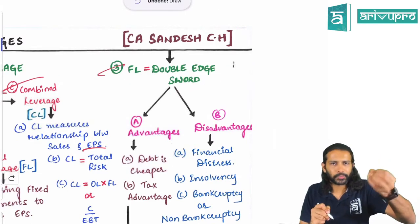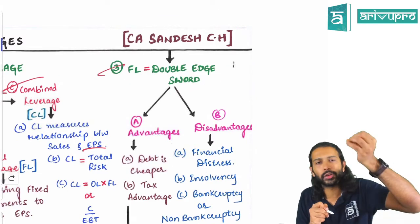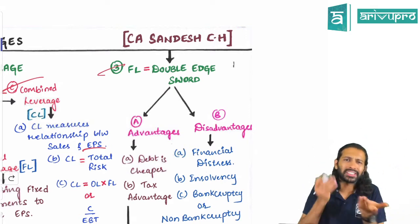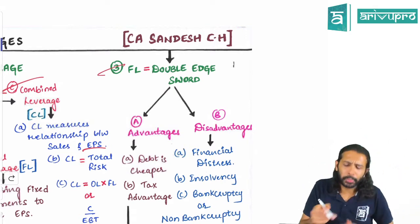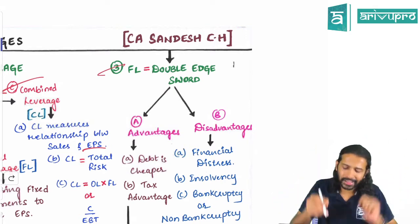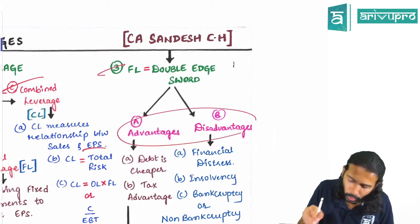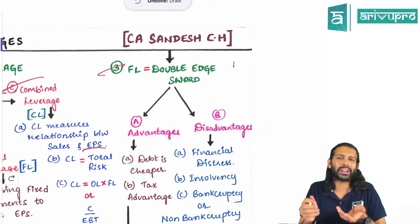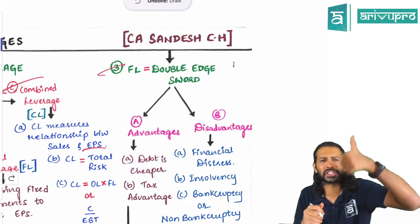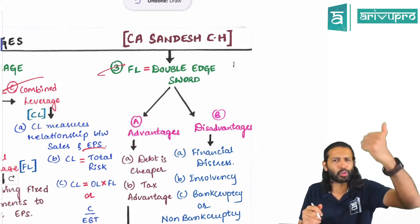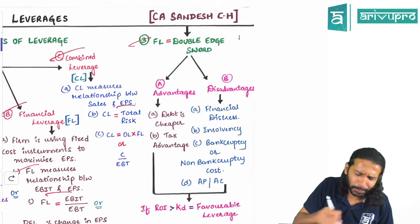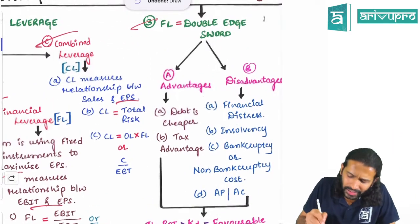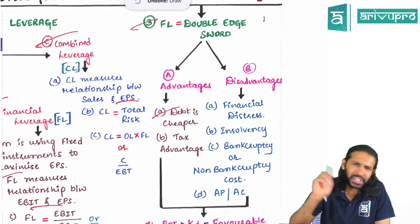Financial leverage is a double-edged sword. When you take on debt, you need to pay interest, so this financial leverage has both advantages and disadvantages — as discussed in earlier chapters. One advantage of debt is that it is cheaper compared to equity.